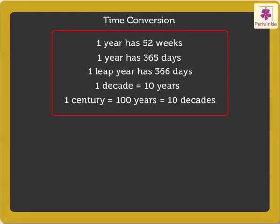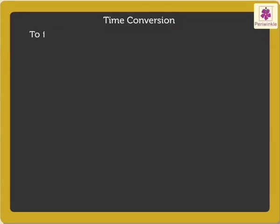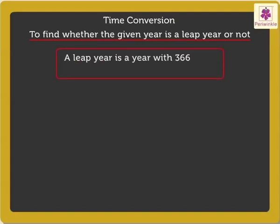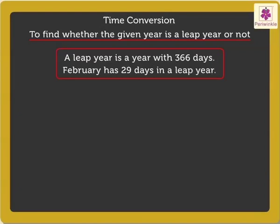Now, let's learn how to recognize whether a given year is a leap year or not. We know that a leap year is a year with 366 days, wherein the month of February has 29 days. In order to find whether a year is a leap year or not, we just need to follow two simple rules.